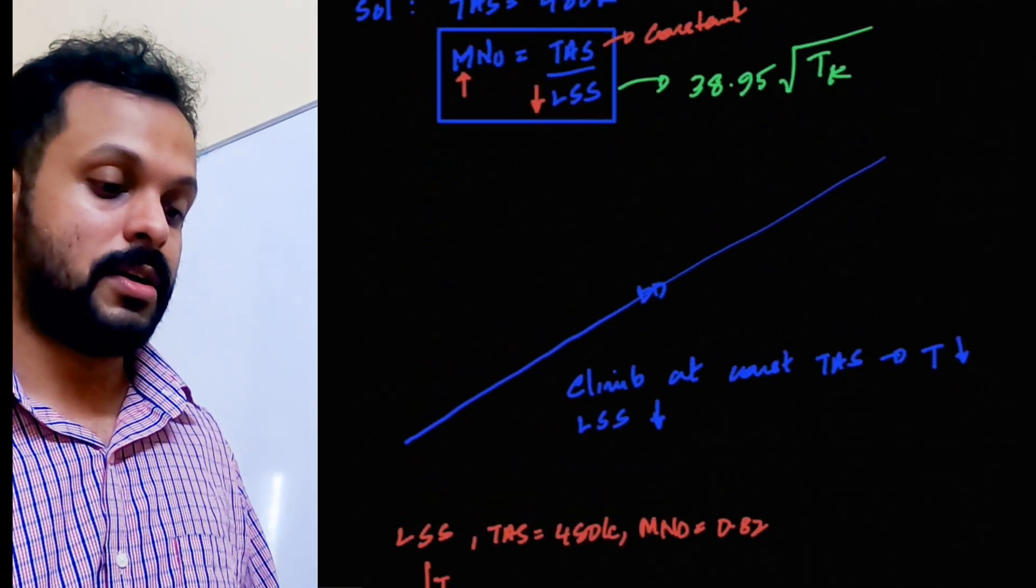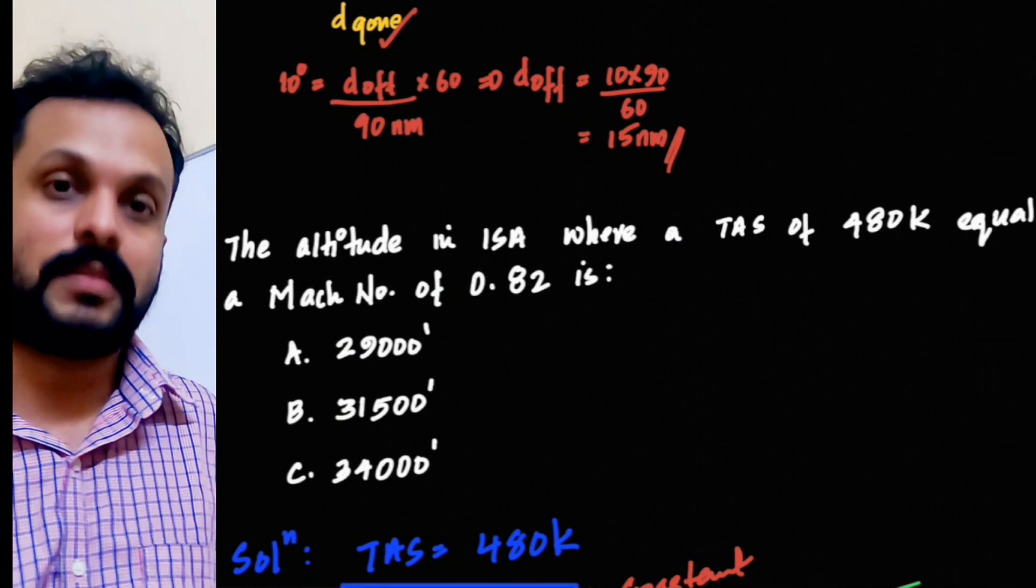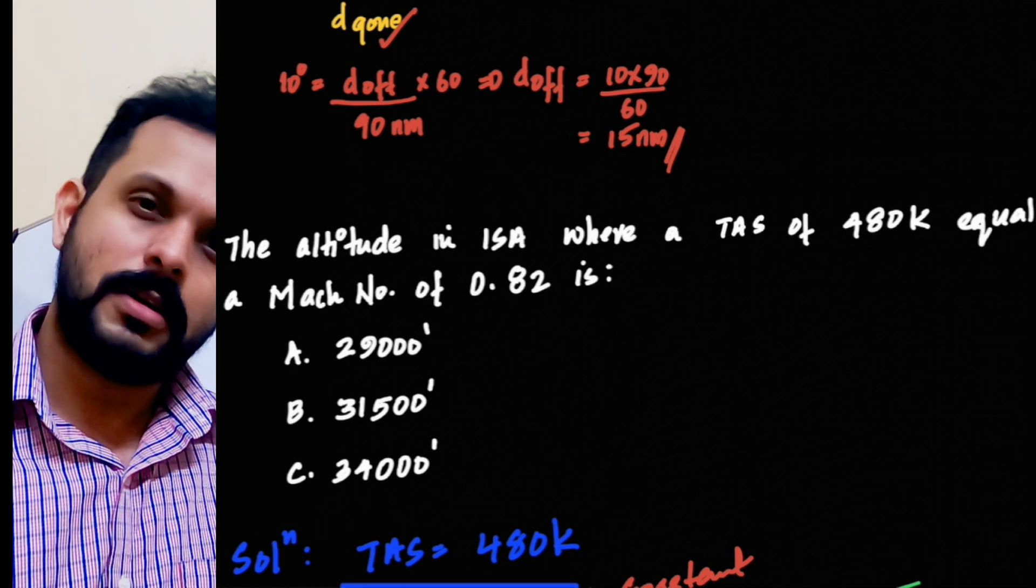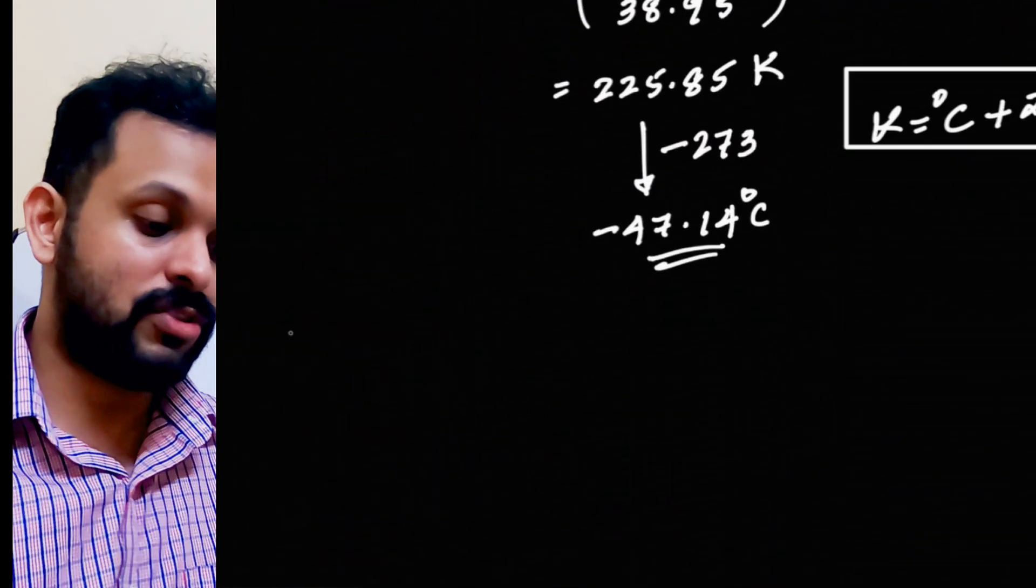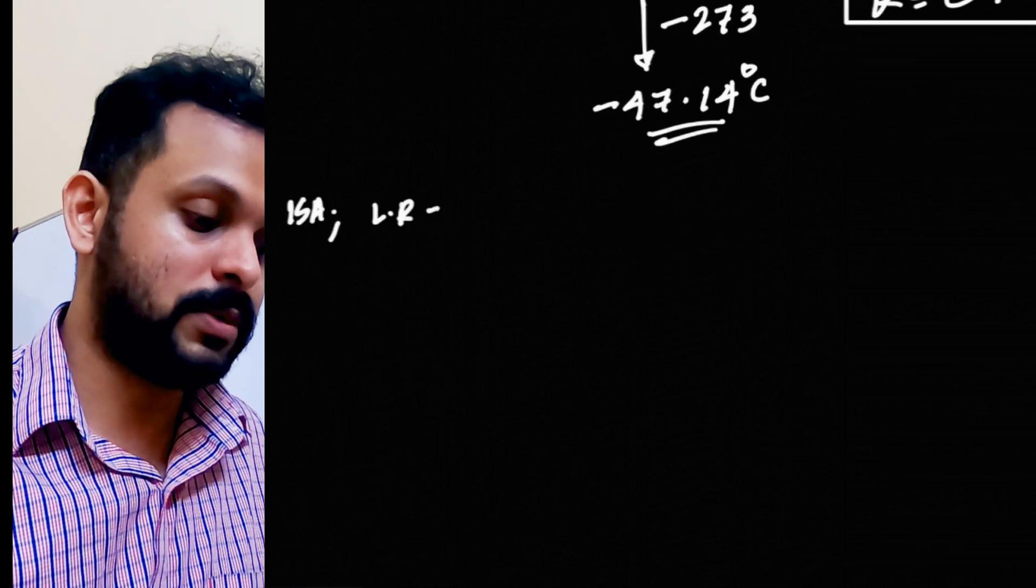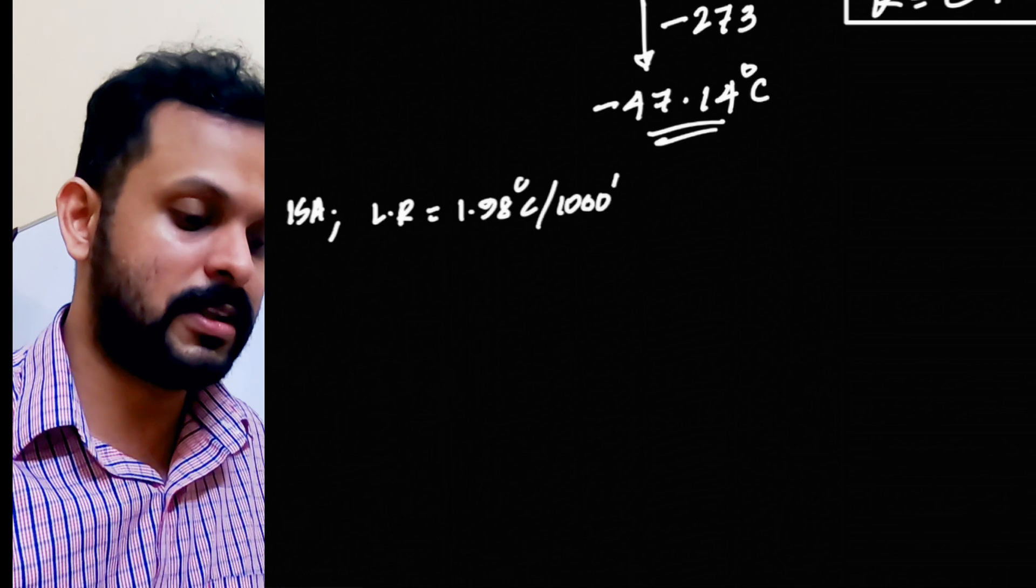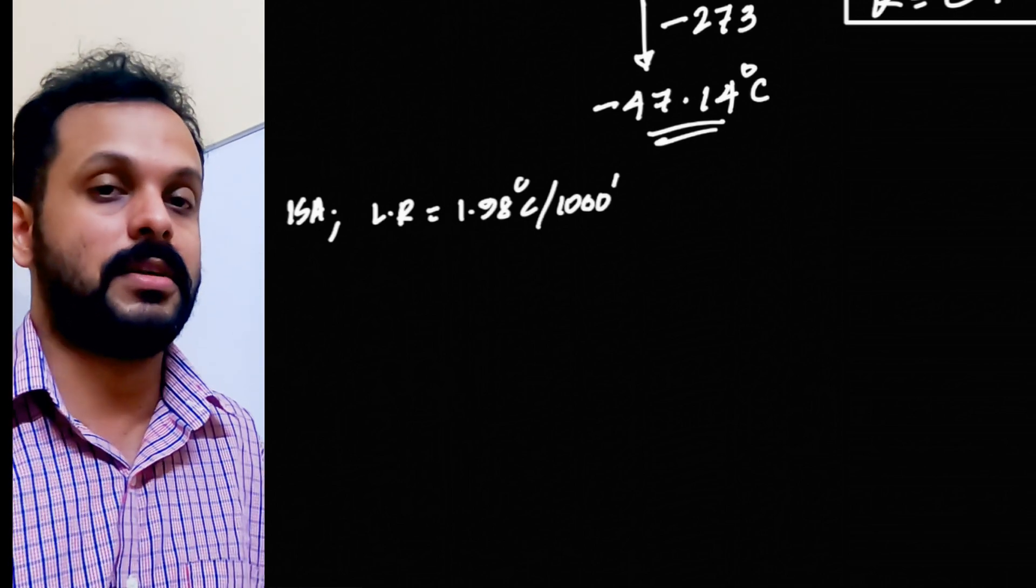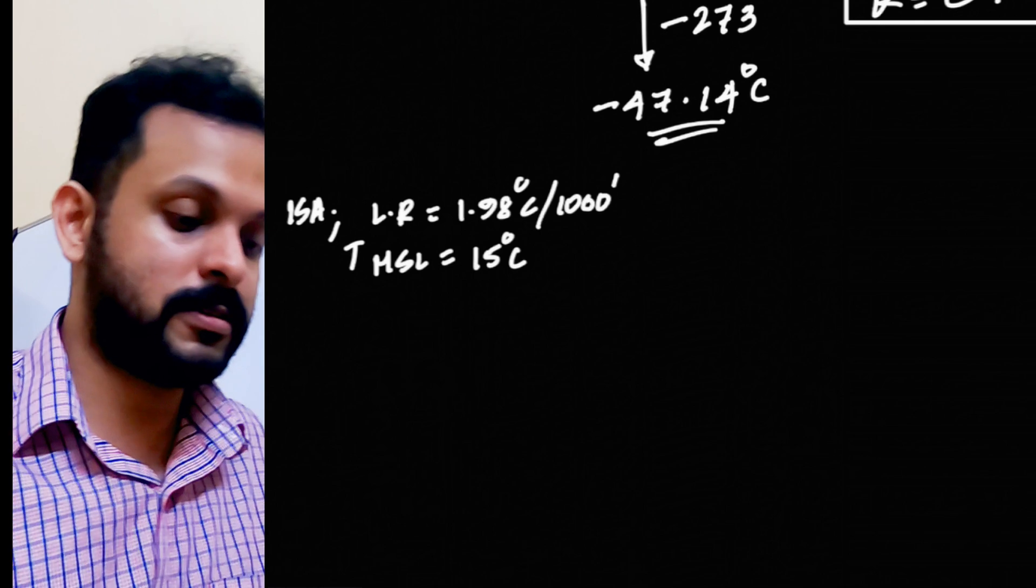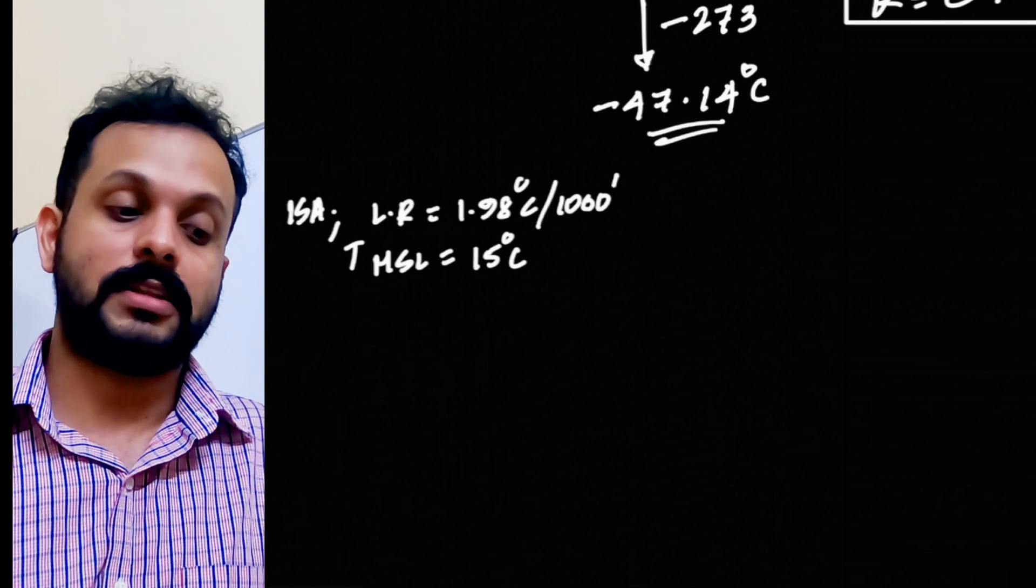Now, we are asked to find out the altitude where a TAS of 480 would correspond to a Mach number of 0.82. Let's find out. The condition is ISA here and we know that under ISA conditions, we have a lapse rate which is reduction in temperature with height of 1.98 degrees Celsius per 1000 feet. There is nothing wrong in taking 2 degrees Celsius per 1000 feet. I'll keep it more precise here. Under ISA conditions, the mean sea level temperature is 15 degrees Celsius and every 1000 feet you lose 1.98 degrees Celsius.